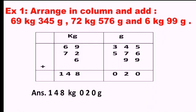The first question says: arrange in column and add 69 kg 345 gram, 72 kg 576 gram, and 6 kg 99 gram. Here two different units are involved — kilogram and gram. So you have to make two different columns: one for kg and another for gram.